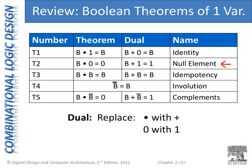Null element: if we have a variable in an AND relationship with zero, it nulls out the effect of that variable, and we just get zero as the result of that expression. The dual — replace the ANDs with ORs, zeros with ones — if we have a variable in an OR relationship with a one, it nulls out the effect of the variable, and we get one back. So that's the null element theorem.